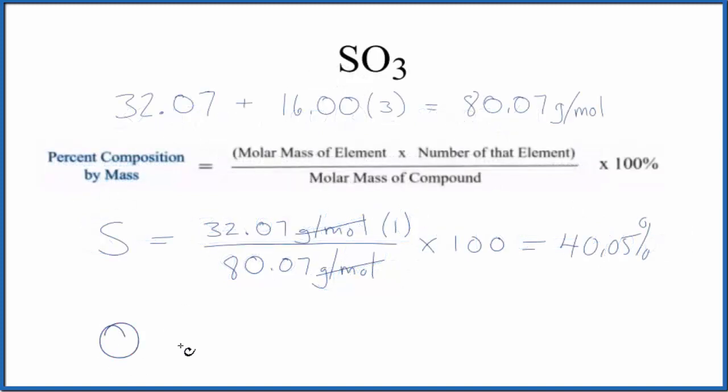For the oxygen, oxygen on the periodic table is 16.00 grams per mole. I won't write that because it's just going to cancel out. We have the number of that element—three oxygen atoms.